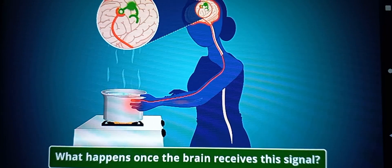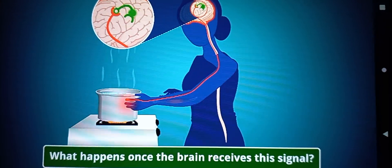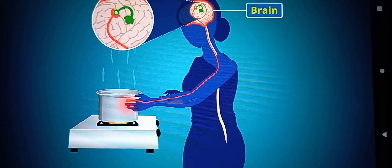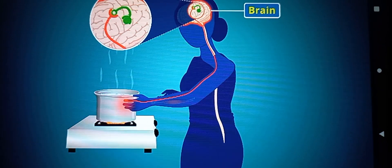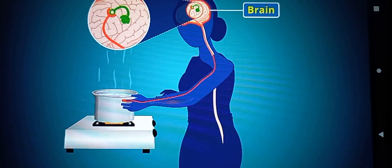Now, what happens once the brain receives this signal? The brain takes a decision that the hand should be removed from the hot surface.